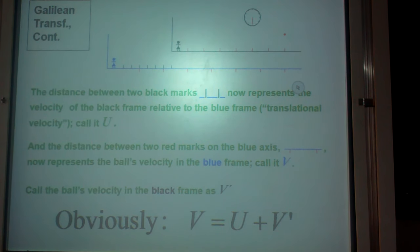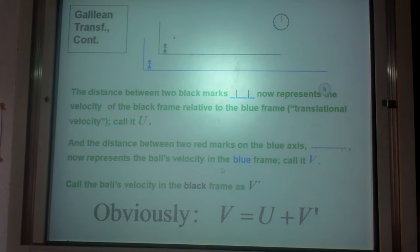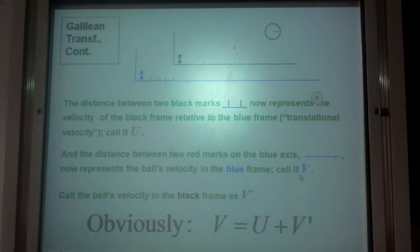The frame is moving with one velocity. The difference in the velocity measurement made by blue frame of reference and black frame of reference is translational velocity. And the distance between the two red marks on the blue axis represents the ball velocity in the blue frame. We call it as V.